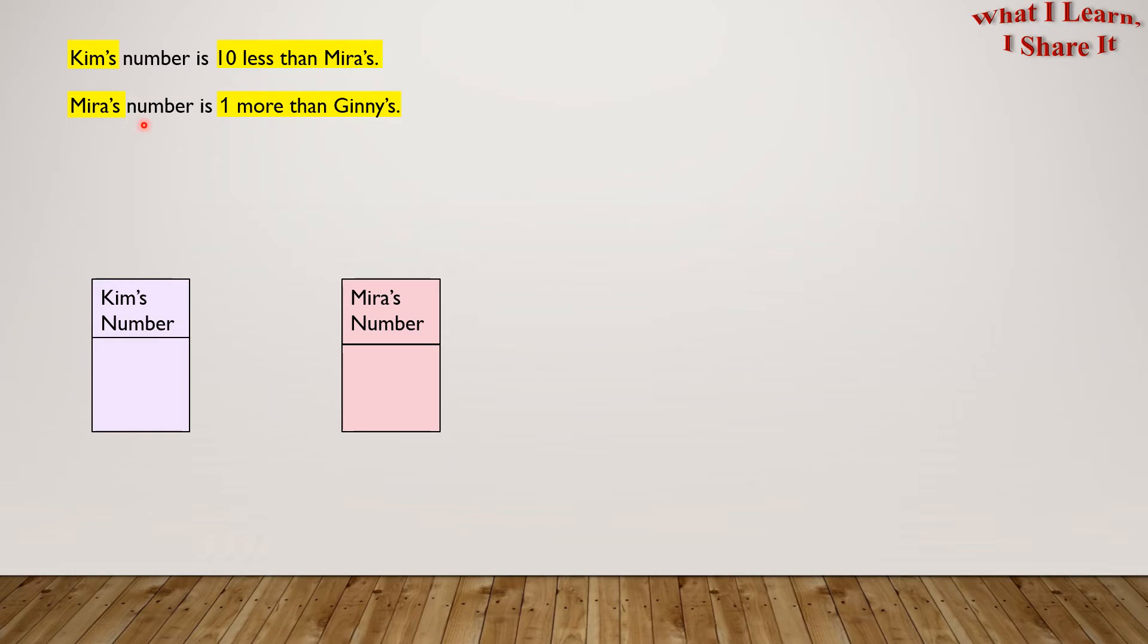Mira's number is one more than Gini's. Since Mira's number is more than Gini's, let's put Mira's number after Gini's number.